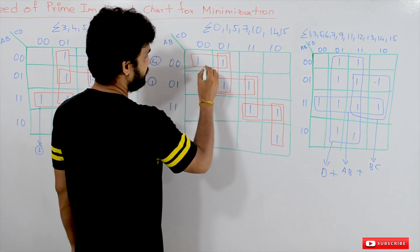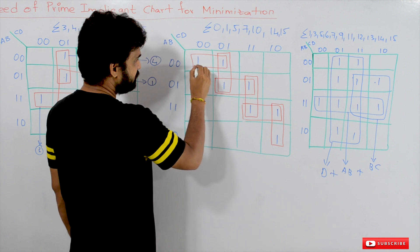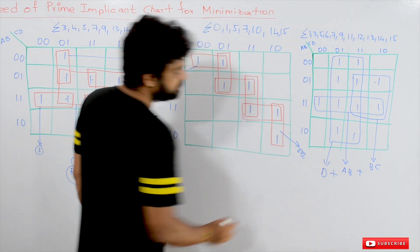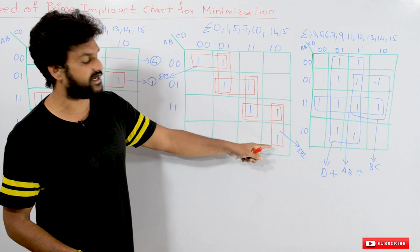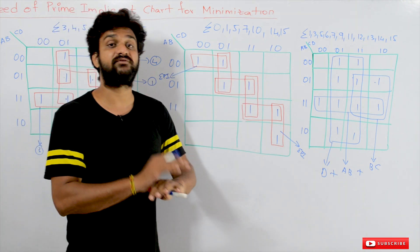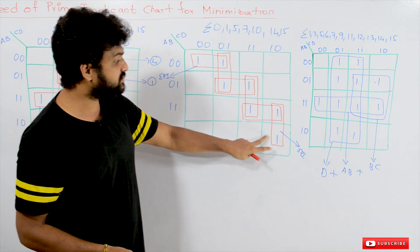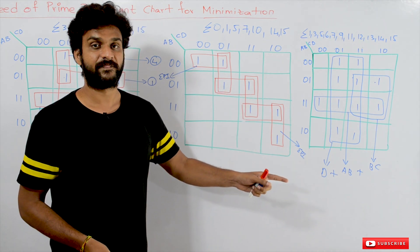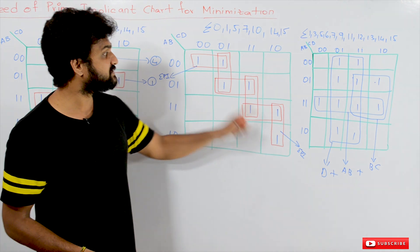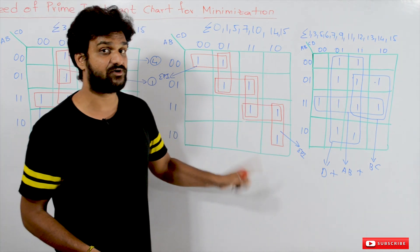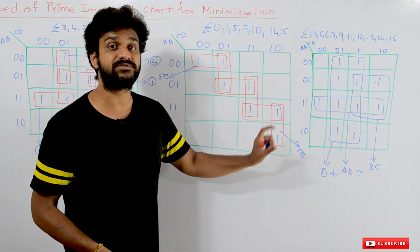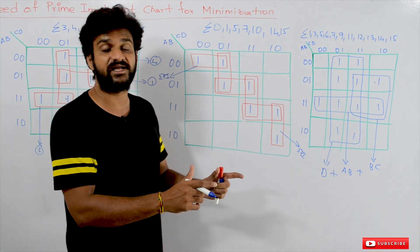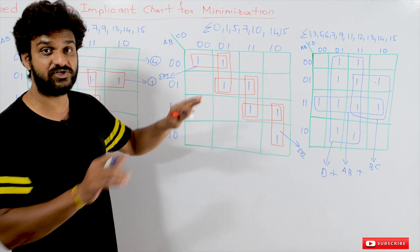How many essential prime implicants are there? There are two essential prime implicants. These are the only prime implicants covering terms not covered by any other prime implicant. Minimizing these two is mandatory — without minimizing these two, we are not going to get the minimal solution.